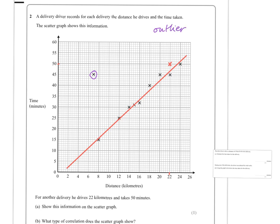And an outlier just means a piece of data that doesn't necessarily fit with the vast majority of the other data points, but we'll come to that later on. So what type of correlation does the scatter graph show? I personally would say a strong positive correlation.